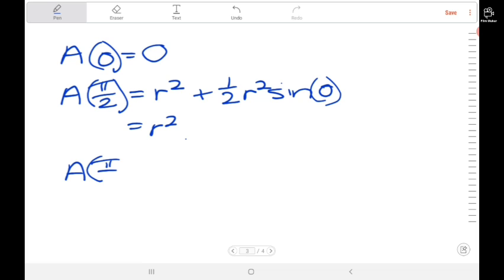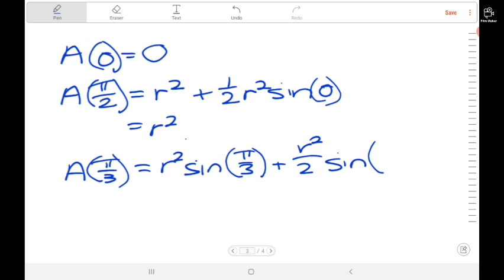Finally, we're interested in the area at pi over 3, our critical point. So we get r squared sine of pi over 3 plus r squared over 2 sine of pi over 3, because pi minus 2 theta is still pi over 3.